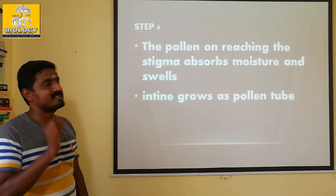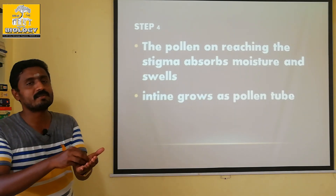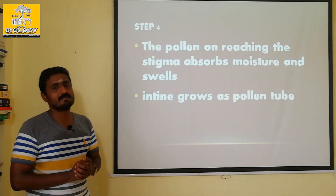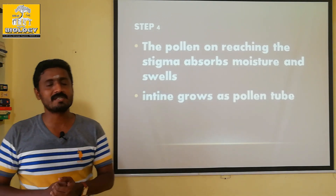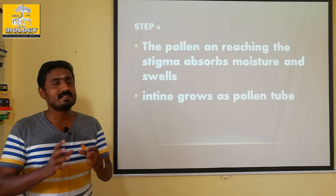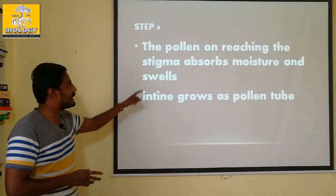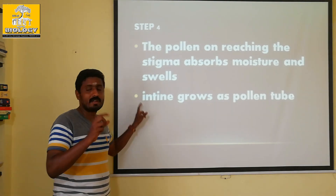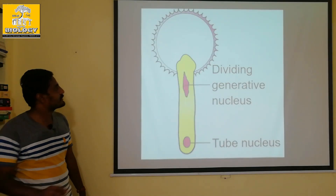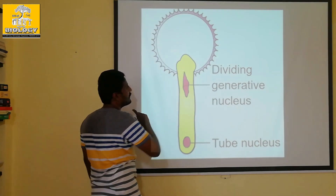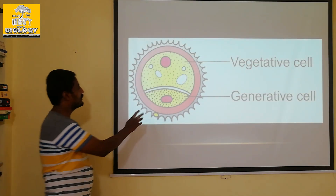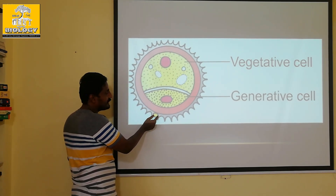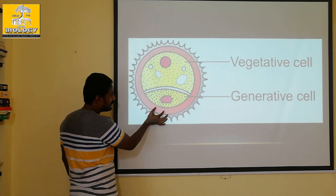The pollen on reaching the stigma — if you look at the exine and exine, you can see the germ pore. If you look at the germ pore, it is having thin exine. It is easier to use the germ pore.